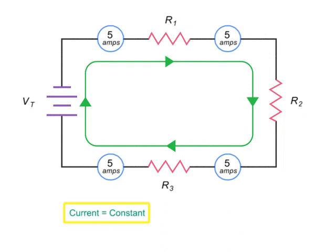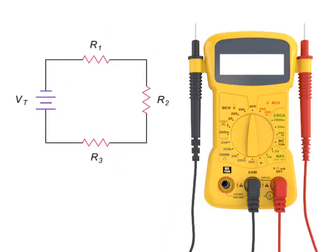Although current is constant throughout a series circuit, voltage is not. Voltage in a series circuit is divided across the load resistors so that the sum of the individual voltages equals the total voltage applied. This relationship is known as Kirchhoff's Law.